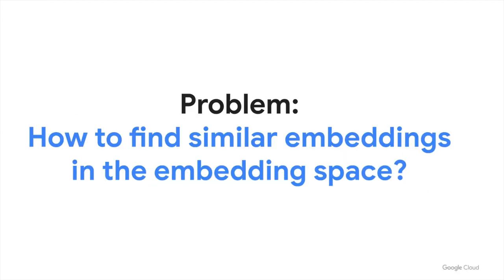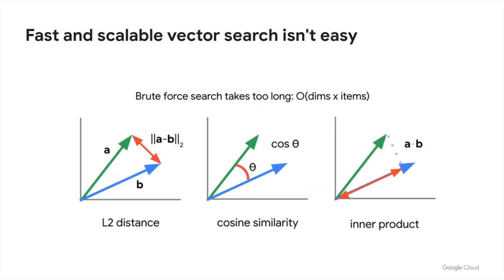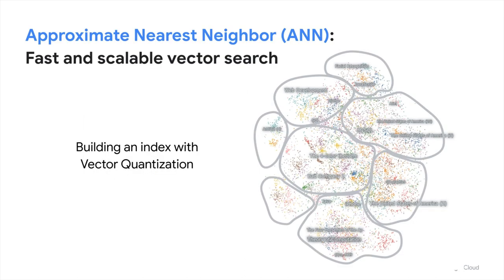The second key enabler of the Stack Overflow demo is the vector search technology, another innovation in the data science field. The problem is how to find similar embeddings in the embedding space. Since embeddings are vectors, this can be done by calculating the distance or similarity between vectors. But this isn't easy when you have millions or billions of embeddings. For example, with 8 million embeddings of 768 dimensions, you'd need to repeat the calculation on the order of 8 million × 768. This would take a very long time — when we tried this on BigQuery with 1 million embeddings 5 years ago, it took 20 seconds.